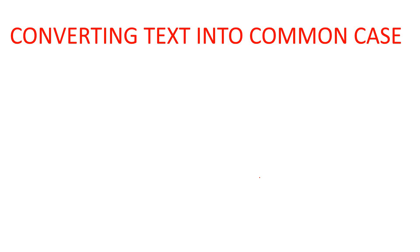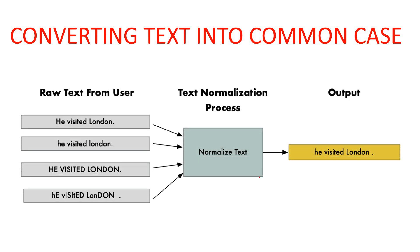Next is converting the text into a common case. Different sentences may be written in title case, sentence case, or other cases. Everything should be converted into lowercase. For example: 'He visited London' written in different cases — when we normalize it, we convert it to small/lowercase so that the machine can understand it easily.